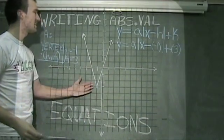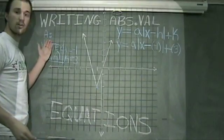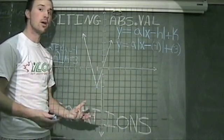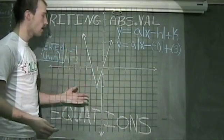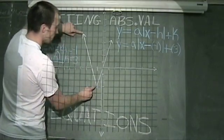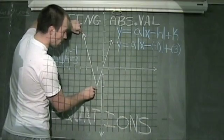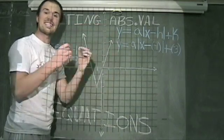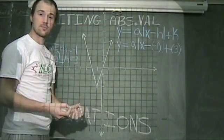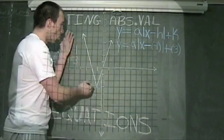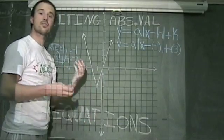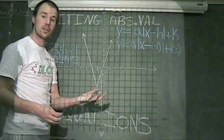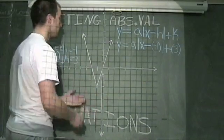Next thing we need to do is identify what our a value is. The a value tells us the steepness, or the slope, of this graph. Now, the interesting thing is, the slope of this piece of the graph, and the slope of this piece of the graph, will be exact opposites. So we will find one of them, and then we'll use the shape of the graph to help us determine whether that number should be the positive number that we find, or the negative number that we find.